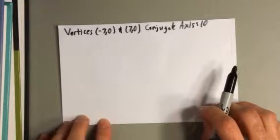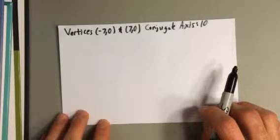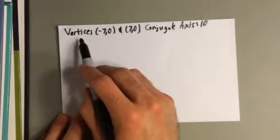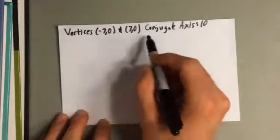They give us information and ask us to come up with the equation of a hyperbola. They tell us the vertices are at (-7, 0) and (7, 0).